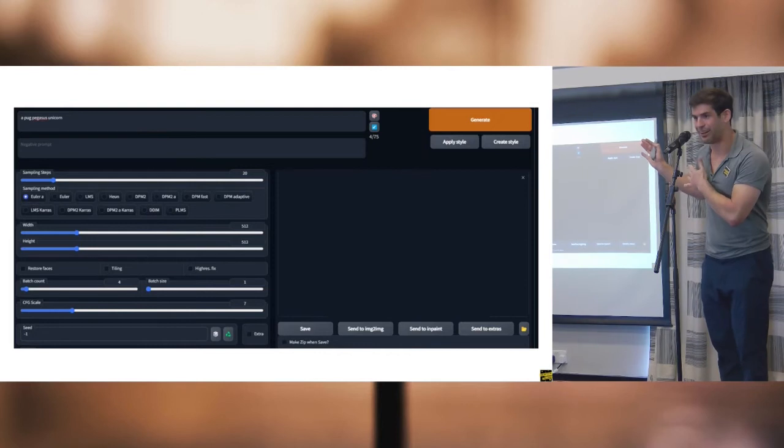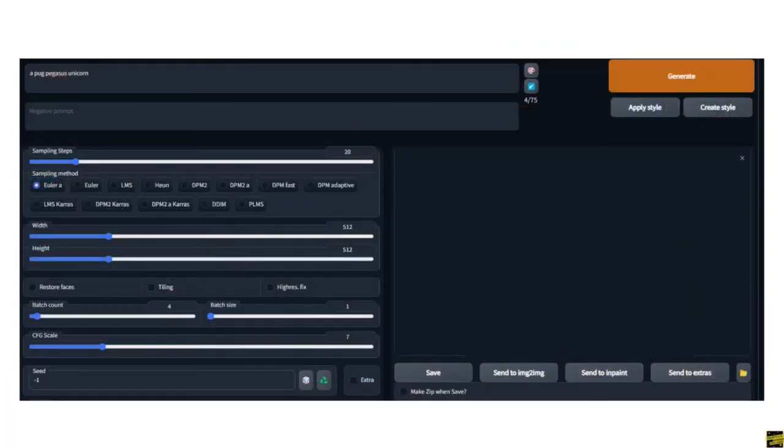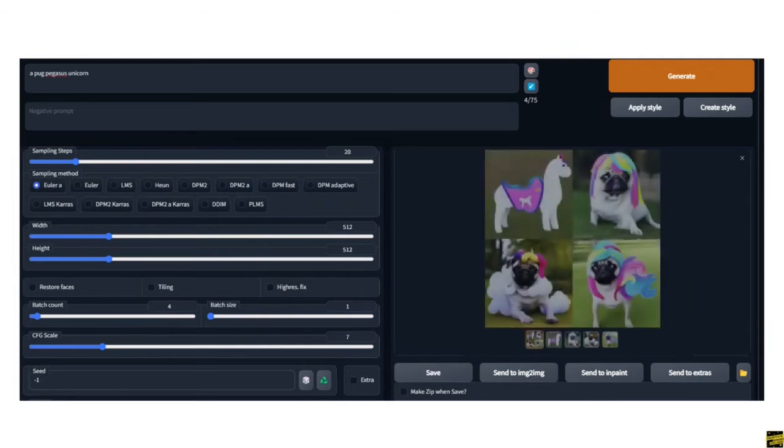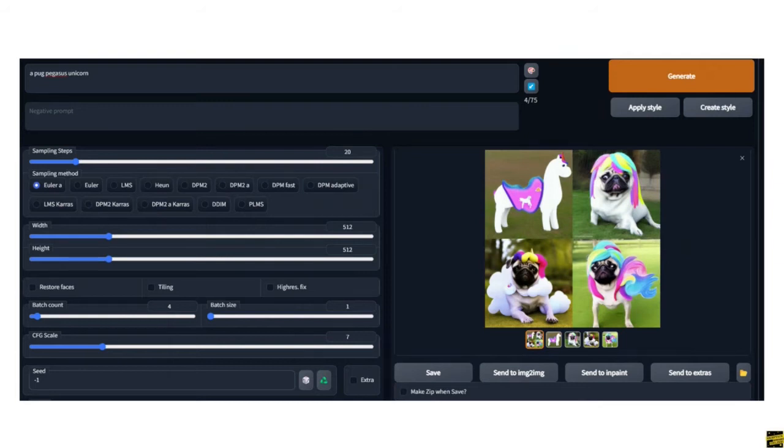So we're going to look at Stable Diffusion. So this is the interface that I have for it. It's a lot more complicated. There's a million different sliders and options and things. But ultimately, there's a text box at the top and a generate button and a pug pegasus unicorn. So that's basically how you use it. You type different things, you get images, and you keep the ones you like.